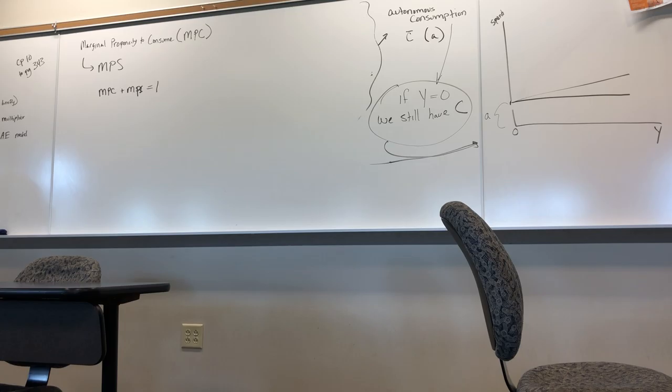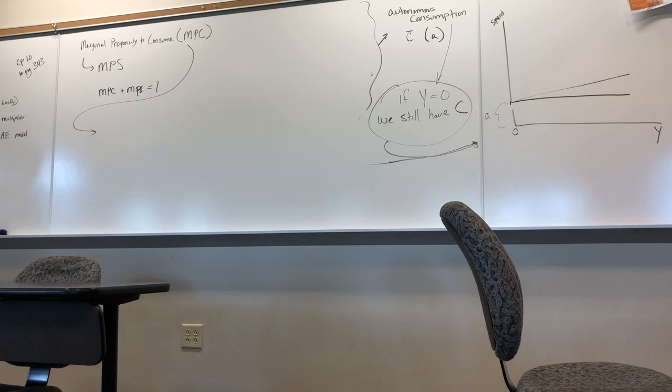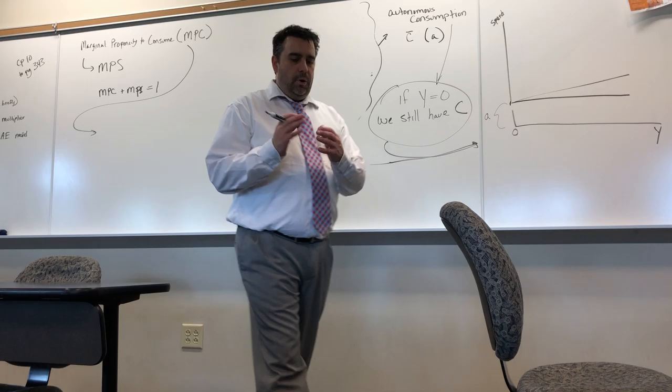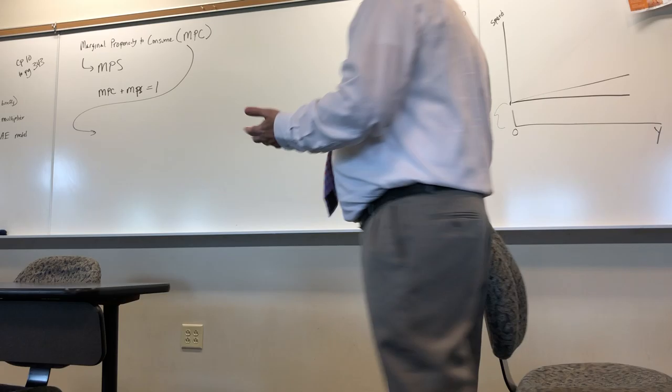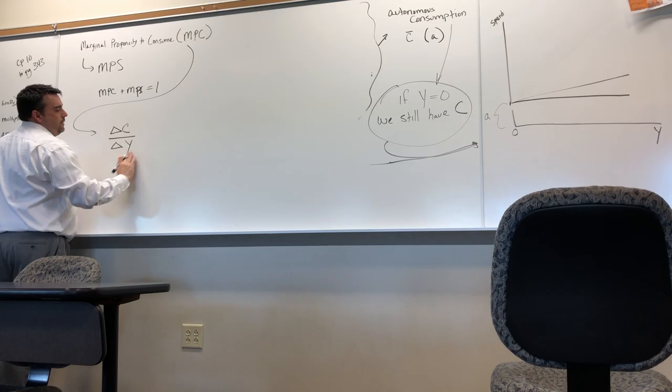So can we calculate MPC or MPS? Sure. We go back to the definition. We want to know what changes for each extra dollar — or mathematically, how does consumption change as income (DI) changes. So MPC equals the change in consumption divided by the change in disposable income.